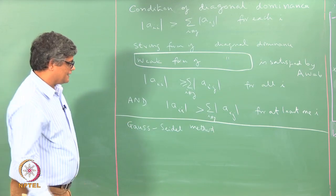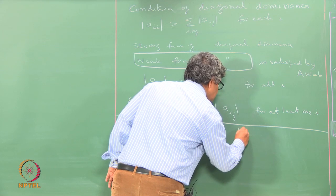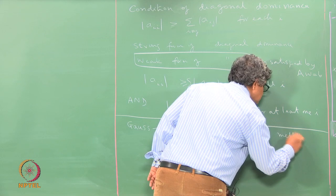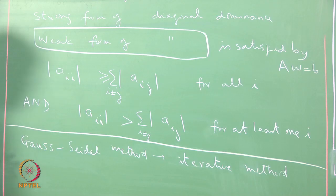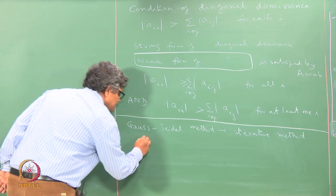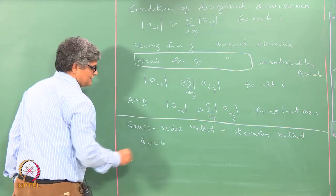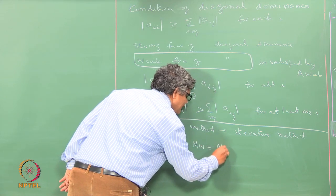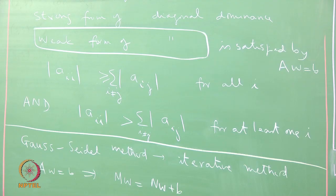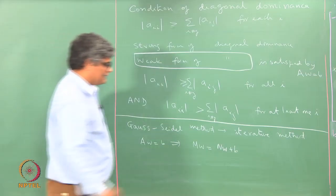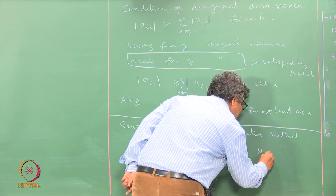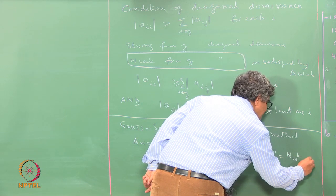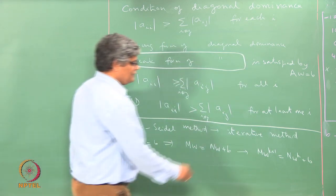The Gauss-Seidel method is an iterative method. We do not solve Aw equal to b directly. Instead, it is put in the form Mw equal to Nw plus b, and this is solved iteratively as M·w^(k+1) equal to N·w^k plus b, where k is the iteration number.